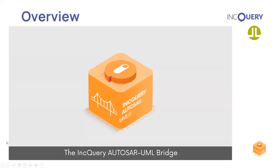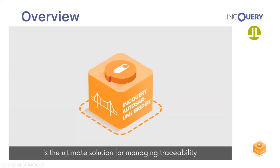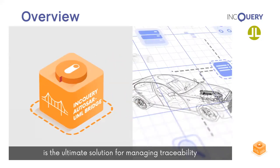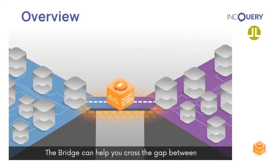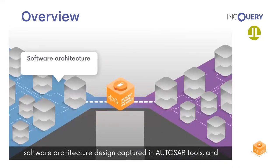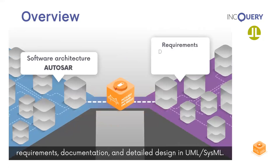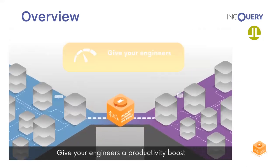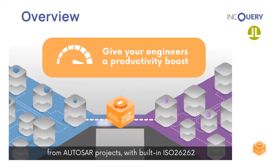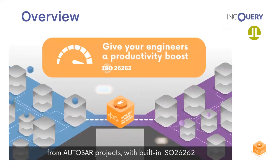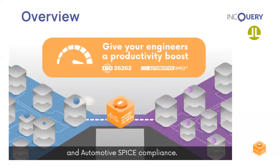The Inquiry AUTOSAR UML Bridge is the ultimate solution for managing traceability in automotive software projects. The bridge can help you cross the gap between software architecture design captured in AUTOSAR tools and requirements documentation and detailed design in UML and SysML. Give your engineers a productivity boost by automatically generating high-quality UML models from AUTOSAR projects with built-in ISO 26262 and Automotive SPICE compliance.